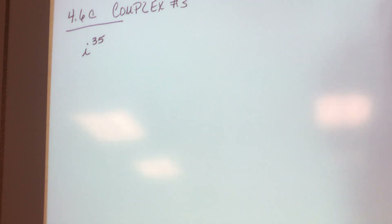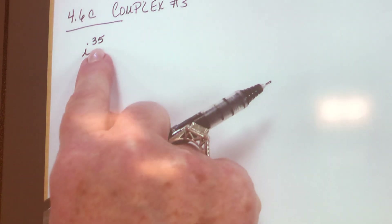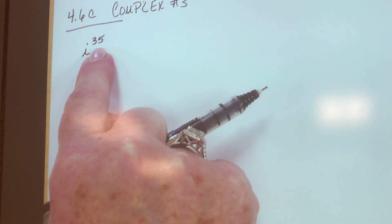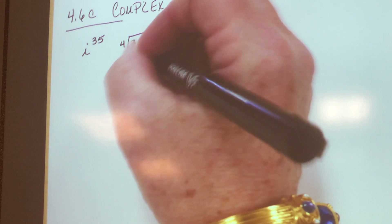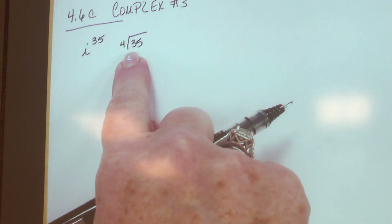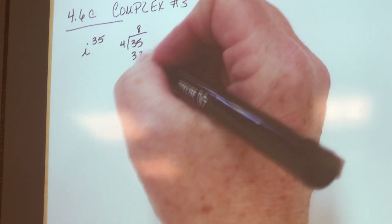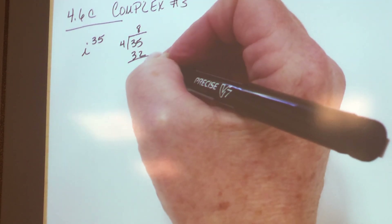So i to the 5th is this guy, i to the 6th is this one, i to the 7th, i to the 8th. We don't want to count all the way down. Here's what we're going to do: we're going to take sets of 4 out of this. I'm going to divide by 4. The only thing I care about is what's left over — the remainder. So what is 4 divided into 35? How many times does 4 divide into 35? 8 times. What's 8 times 4? 32. And 32 from 35 is 3.